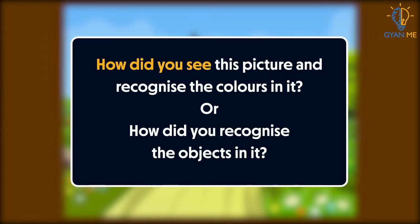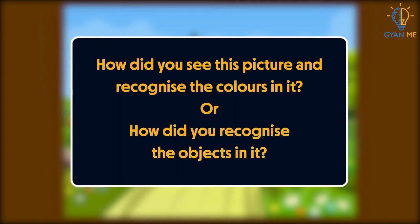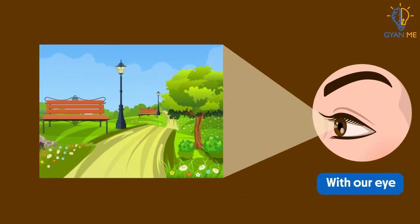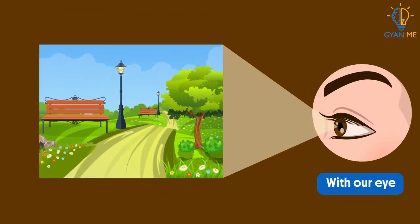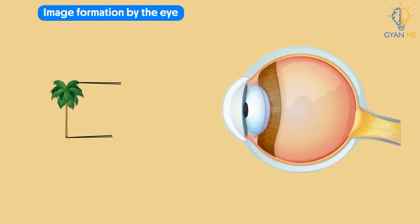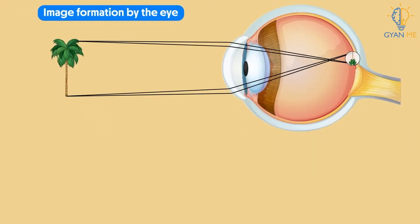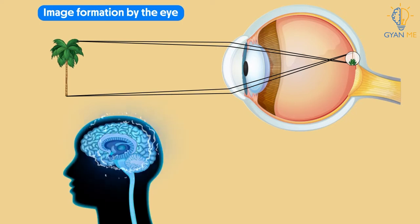Now let me ask you, how did you see this picture and recognize the colors in it? Or how did you recognize the objects in it? You'll answer me it's simple — of course with our eye. But it's not that simple, kids.